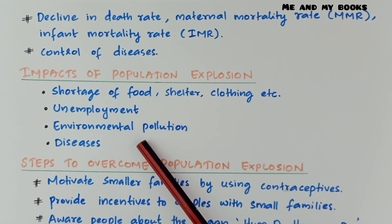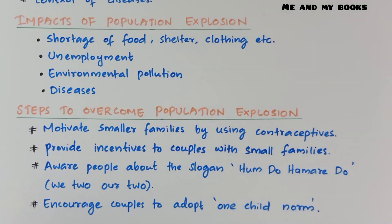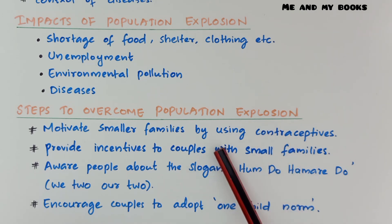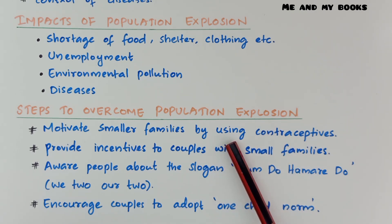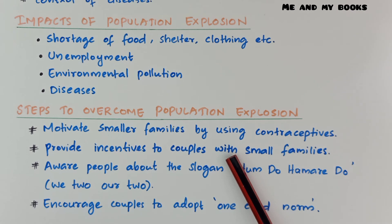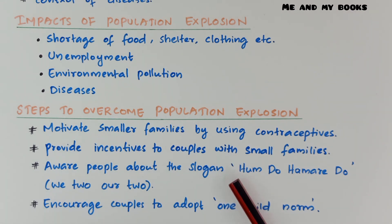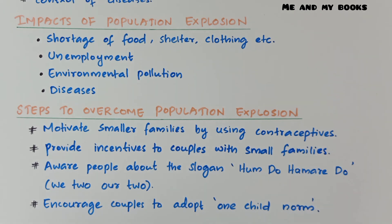There are certain steps to overcome population explosion: motivate smaller families by using contraceptives, which are birth control measures; provide incentives to couples with small families; make people aware of the slogan 'Hum Do, Hamare Do' meaning 'We two, our two'; and encourage couples to adopt children. By doing all these steps, we can reduce population explosion.